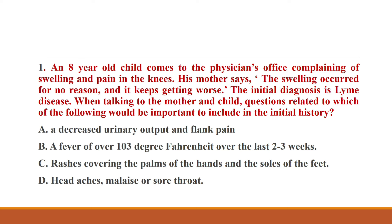The swelling has occurred suddenly and is getting worse, and the initial diagnosis is Lyme disease. We have to find out which signs and symptoms should be included in the initial history — that is, the early signs and symptoms of Lyme disease. Options given are: A) decreased urine output and flank pain; B) a fever of over 103°F over the last 2–3 weeks; C) rashes covering the palms of the hands and soles of the feet; D) headache, malaise, or sore throat.